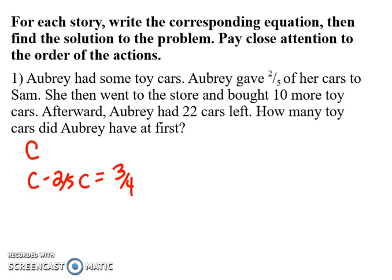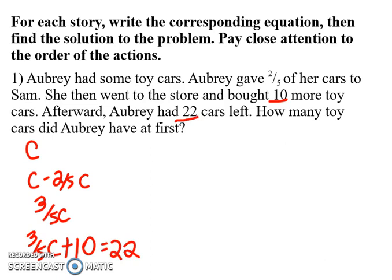So she now has three-fifths C at this point. And then bought ten more. So that's three-fifths C plus ten. And afterwards has 22 cars equals 22.